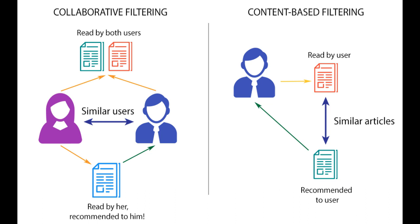So what is a recommender system? A recommender system is simply a technology that helps us deal with the problem of information overload. As a consumer, you have an infinite number of choices — an infinite number of products and content to consume every single day. So how can you find the best products for you, for the problem you're facing — which could be anything from entertainment to food — while spending the least amount of time? Recommender systems simply learn our preferences and then use these learned preferences to recommend products or services to us which we're very likely to like.